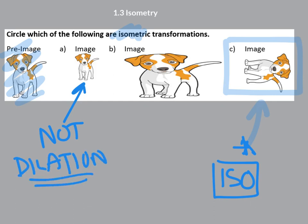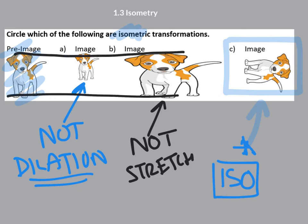This one in the middle would be also not isometric. And I think this one would be basically a stretch, wouldn't it? And why I say it's a stretch is that I notice that the height is the same between the two dogs. But I notice that this dimension has been pulled wider. And so it's a stretch in that manner.